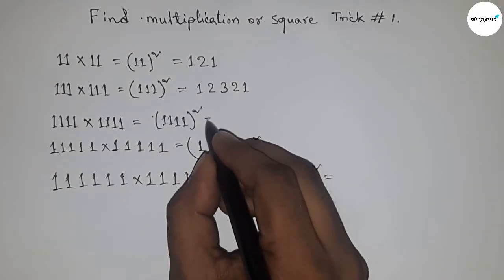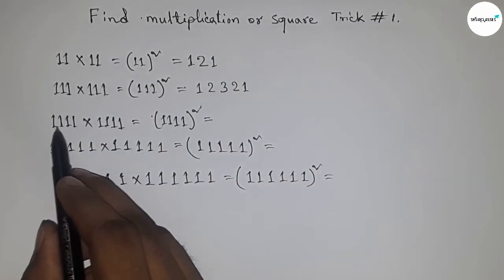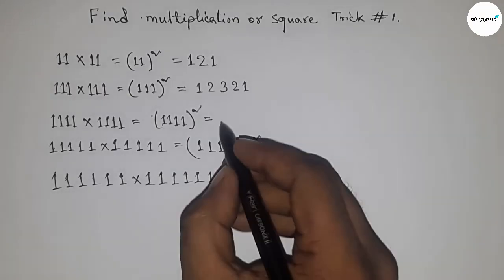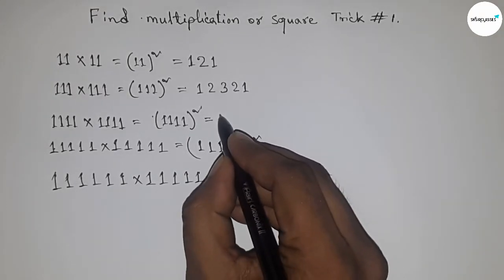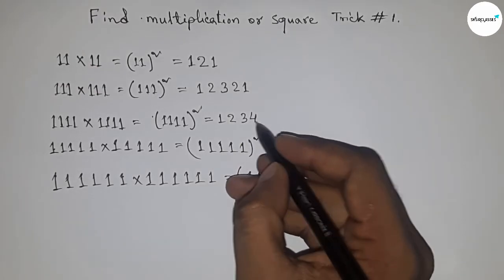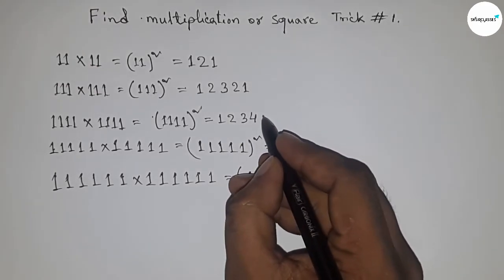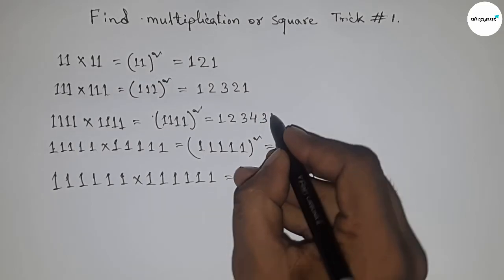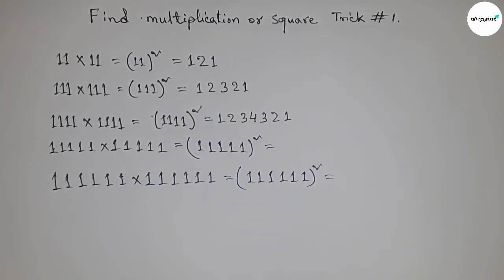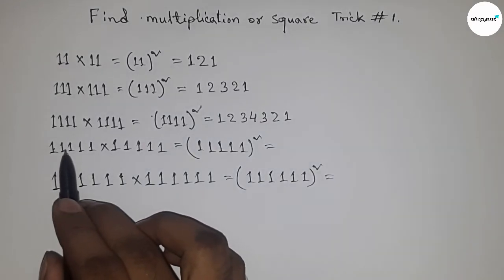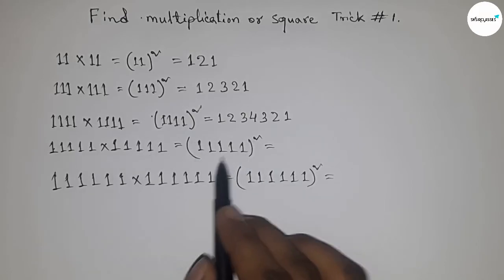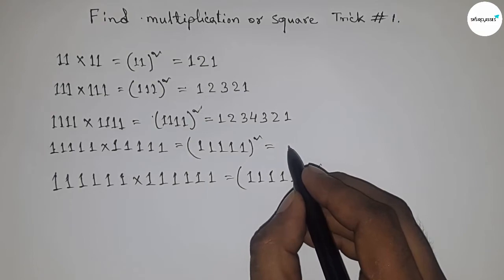Here next, the number of ones is 4, multiplying four ones with four ones. So first write down 1, 2, 3, then 2, 1.